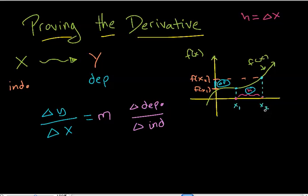The thing that we should notice here is that this x2 is really x1 plus some amount we'll call h. And this f of x2 right here is really f of x1 plus some amount of h.